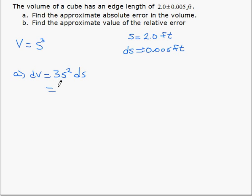And substituting our known values here, we get 3 times 2 squared multiplied by plus or minus 0.005, which tells us that the volume has an error of plus or minus 0.06 cubic feet.